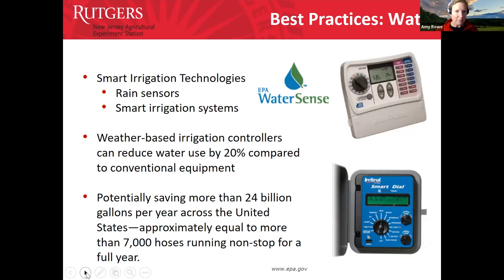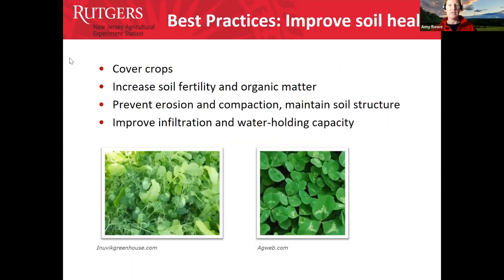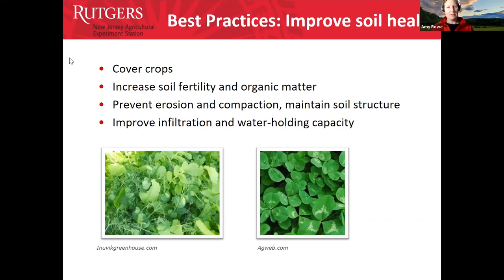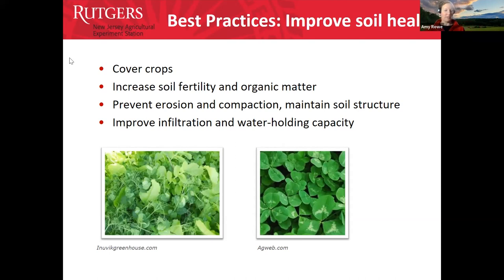Another way to reduce runoff and be more adaptable is to improve soil health. Consider planting cover crops, which increase soil fertility and organic matter, prevent erosion and compaction, maintain soil structure, and improve infiltration and water-holding capacity. This leads to more resilient crops and a healthier soil better equipped to handle changing climate conditions.